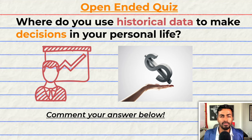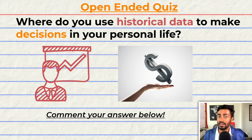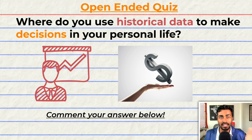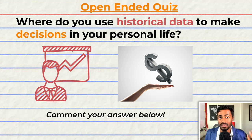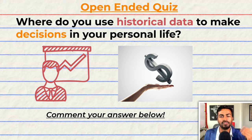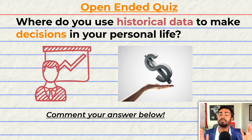Greetings fellow learners. Before we get into this fantastic world of time series forecasting with Transformers, I have a thought-provoking question for you: where do you use historical data to make decisions in your personal life? I personally use this to track my finances — specifically how much I've spent in the last three to six months to determine what my future spending and budget should be. Are there any examples like this in your personal life? Please comment down below.